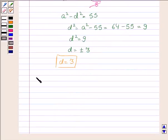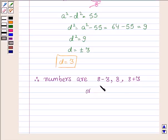And therefore, the numbers are A minus D, that is 8 minus 3, A that is 8, and A plus D, 8 plus 3, or 5, 8, and 11.